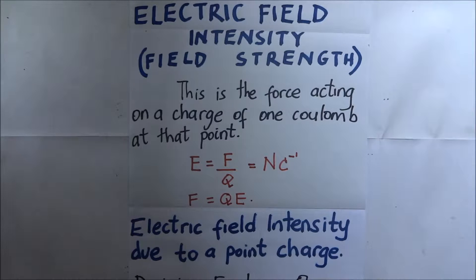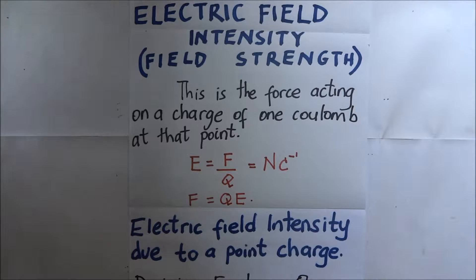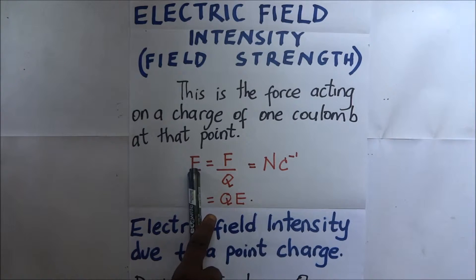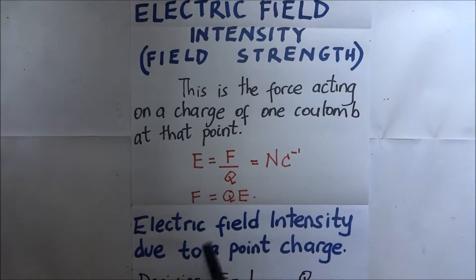Welcome to Kisembo Academy. Today we're looking at electric field intensity, also called field strength. Electric field intensity is simply the force acting on a charge of one coulomb at that point. We have explored before what an electric field means — it is simply the area where the electric strength is felt. The electric field intensity is the force acting on a charge of one coulomb placed at that point, and we label it as E.